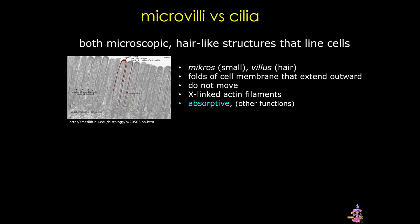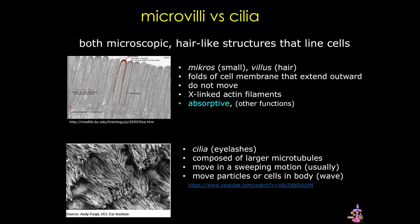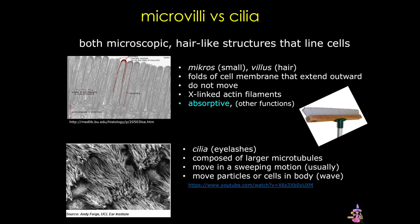Microvilli form the brush border of epithelial cells in the intestine and the kidney, and they function in absorption. In contrast, cilia are found in the respiratory tract, the uterine tube, and the inner ear. They're composed of microtubules and move in a sweeping fashion, causing waves of movement to move particles or cells — recall the mucociliary escalator. I think of microvilli like a brush with very stiff bristles, while cilia are longer and look more like eyelashes. Cilia move while microvilli do not.